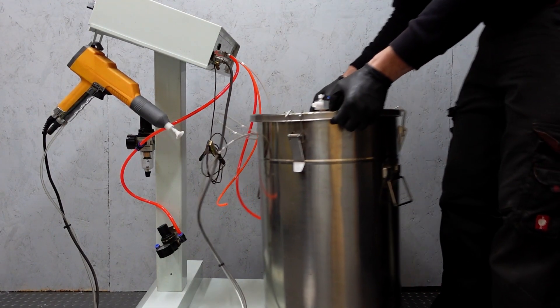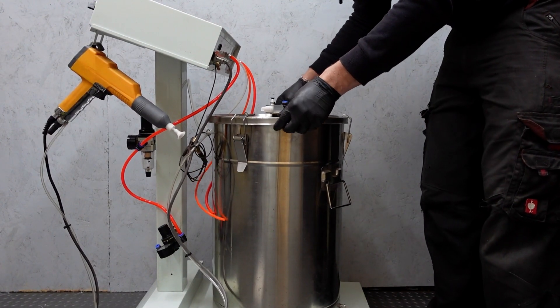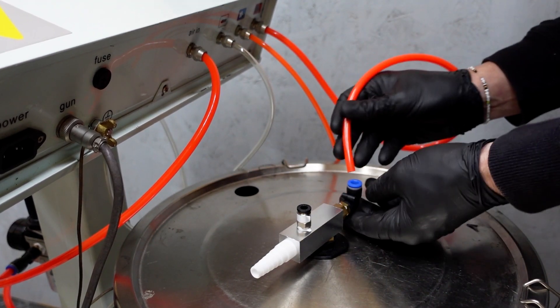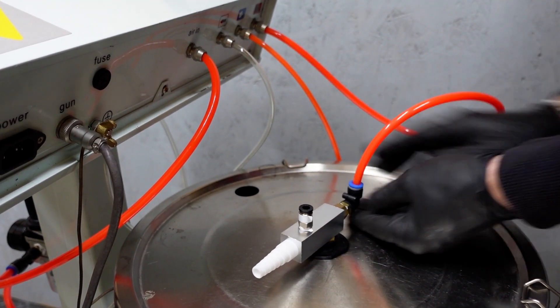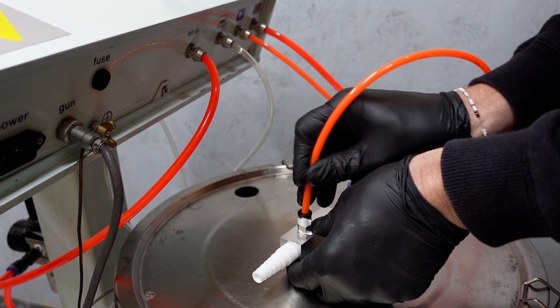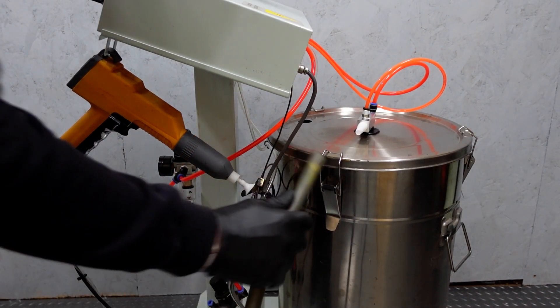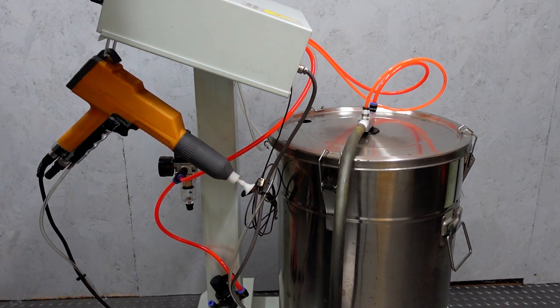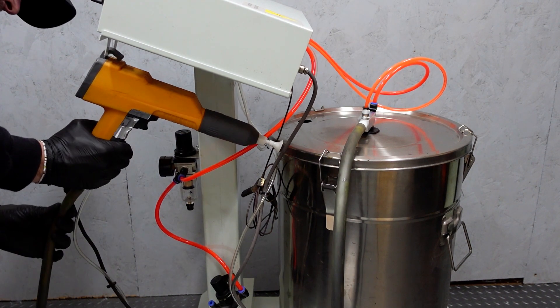So let's place the hopper on the stand. Take the right hand pipe, which is the powder, and connect that to the back. Then take the air and connect it to the front. Then take the large pipe and connect to the front of the hopper. And the other end goes to the back of the gun.